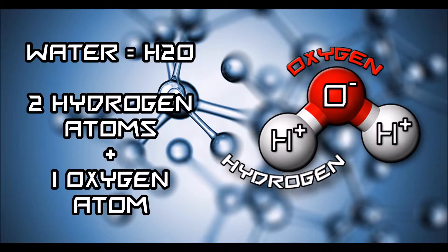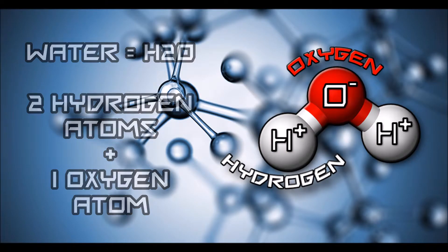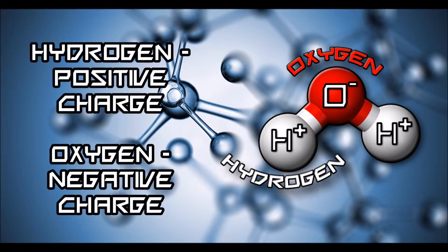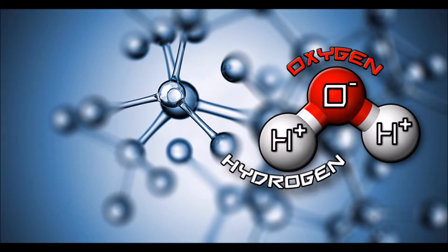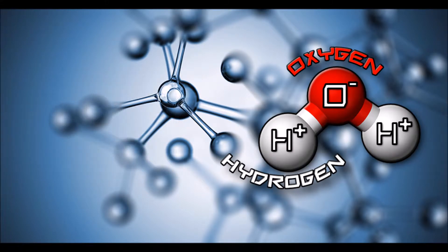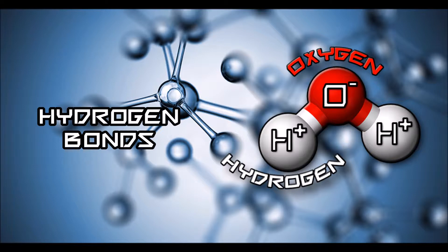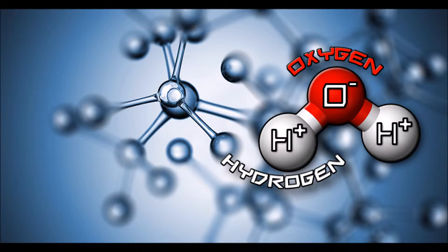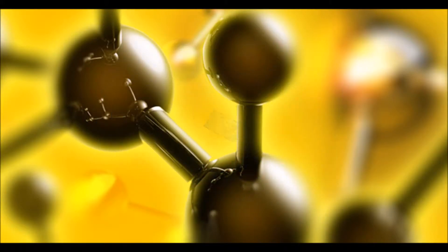Water, H2O, consists of two hydrogen atoms bonded with one oxygen atom. The hydrogen atoms have a slightly positive charge, and the single oxygen atom has a slightly negative charge. The oxygen atom steals electrons from the two hydrogen atoms and this is what gives the molecule its electrical charge. So water is known as a polar molecule. The positively charged hydrogen atoms are attracted to the negatively charged oxygen atoms of other water molecules, forming hydrogen bonds. This is what keeps the individual water molecules together and stops them from flying out of the bottle.